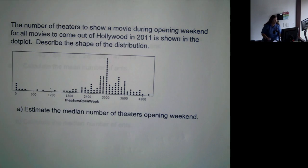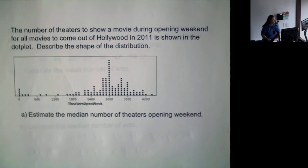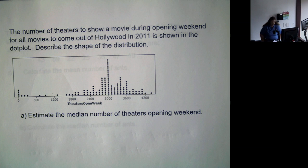So let's look at another dot plot. This is the number of theaters to show a movie during opening weekend for all the movies to come out of Hollywood in 2011. We've actually used this data set before.